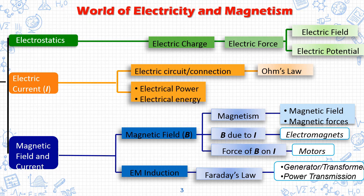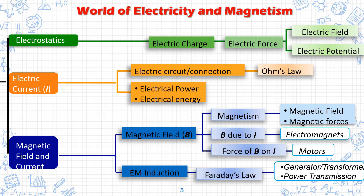Magnetism includes magnetic field, magnetic forces, and current. When current and magnetism are combined, they produce electromagnets. If there is a force between magnets and current, that gives us motors. For electromagnetic induction, Faraday's law is the basis for generators and transformers, and for power transmission.